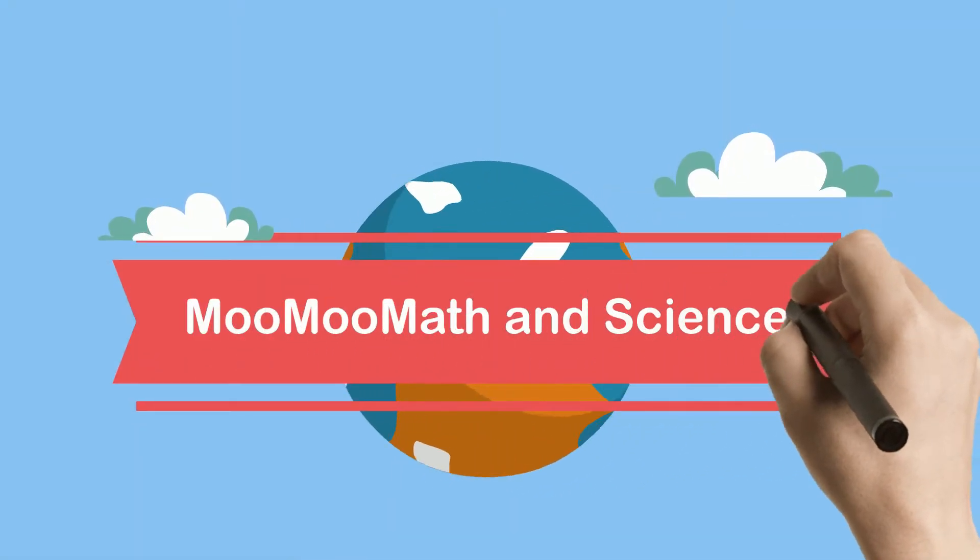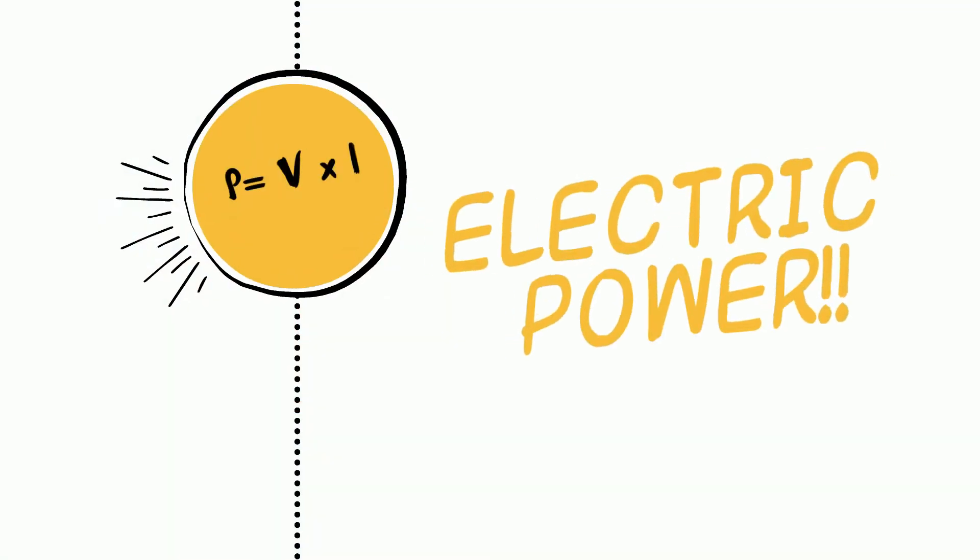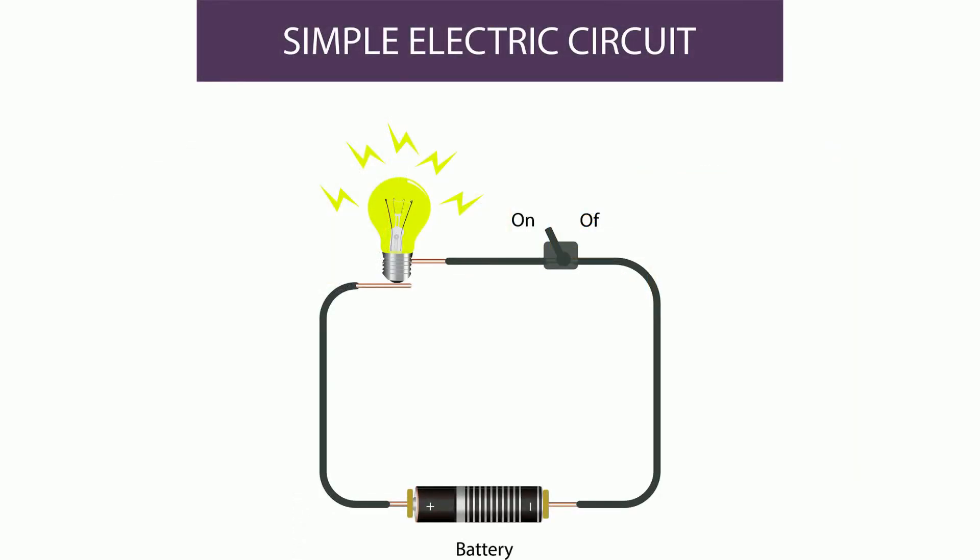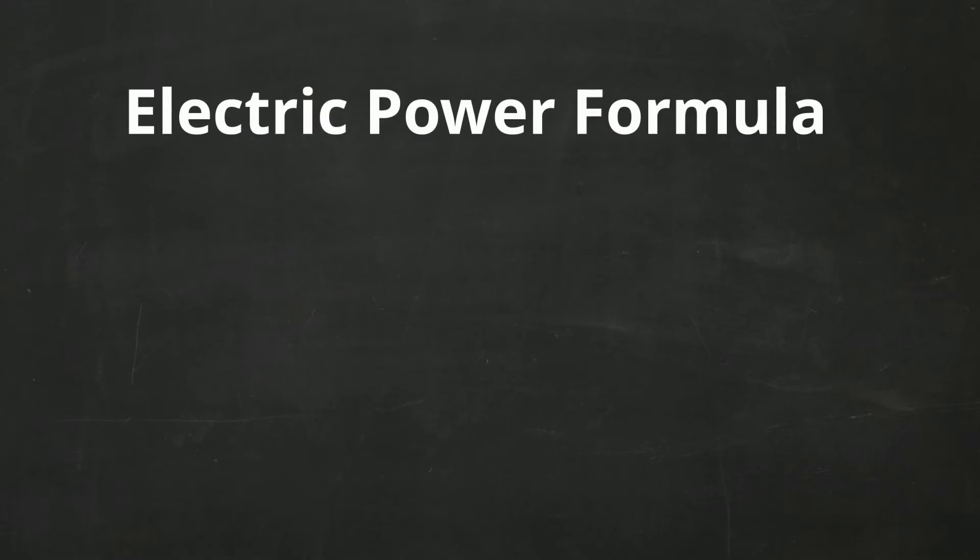Welcome to MooMap and Science. Electric power is the rate at which electrical energy is transferred by an electric circuit. The formula for electric power is P equals V times I.